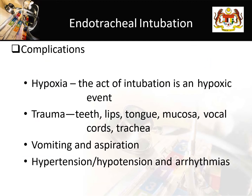During endotracheal intubation, anticipate complications including hypoxia — since the patient is paralyzed and not breathing spontaneously, a prolonged intubation attempt can cause hypoxia and death. The laryngoscope and endotracheal tube can cause trauma to the teeth, lips, tongue, mucosa, vocal cords, and trachea if performed incorrectly. There is also a risk of vomiting and aspiration if the process is not done properly. Additionally, intubation is a stressful process that can lead to hypertension and arrhythmia, and the medications and paralytic agents given can also cause hypotension.